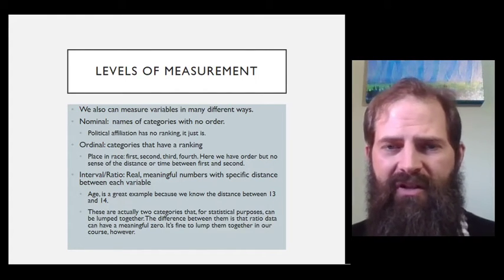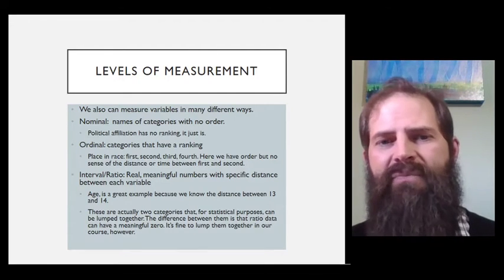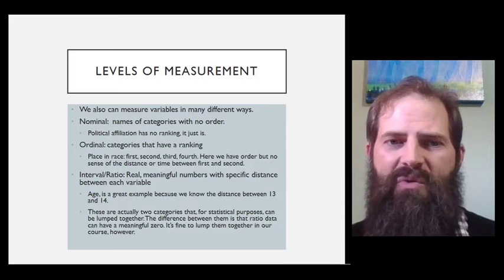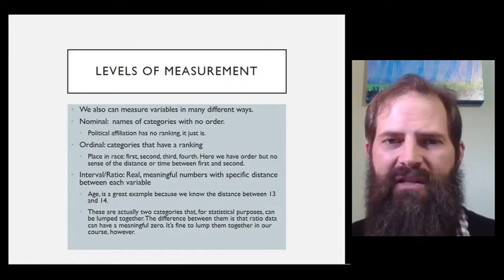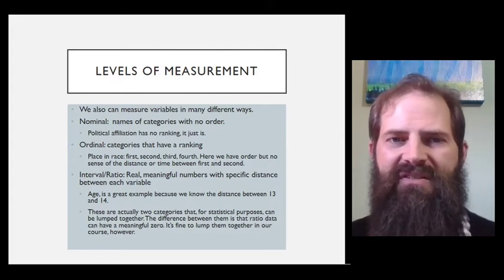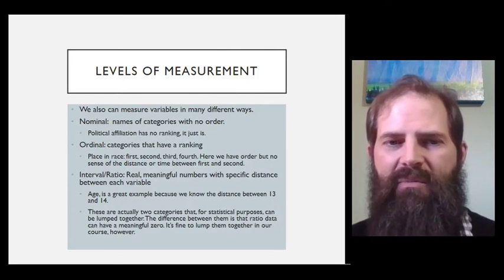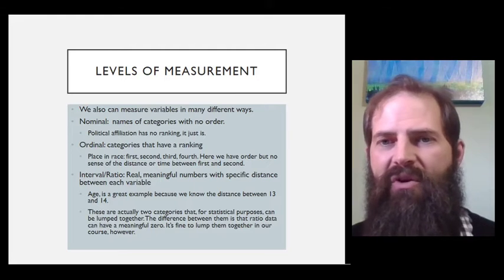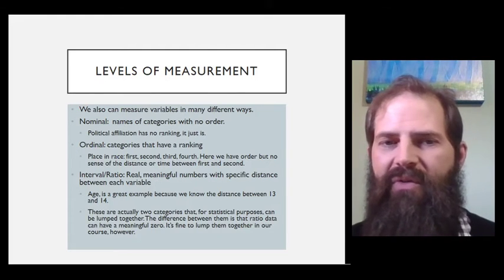So one person finishes the first lap in one minute and then everybody else takes three minutes, and then second, third, fourth, and fifth are maybe really close together. Only seconds come apart between second and fifth. That's kind of one of the issues with ordinal data: we don't know the exact distance between them. They're just sort of ranked orders. And since we don't have a sense of distance or time between them, we think about them as just being ordered categories.